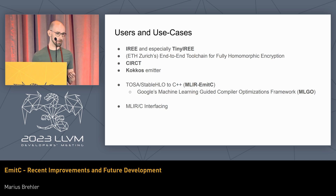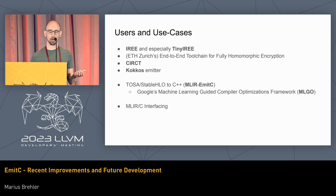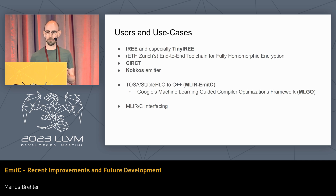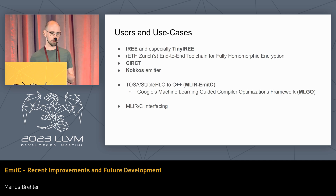What I mainly want to present is use cases we've found out in the wild that we weren't aware of. One of those is Erie and especially Tiny Erie, which we worked on, but EmitC is also used in toolchains for homomorphic encryption — a talk was given yesterday evening, and other frameworks use it as part of their fully homomorphic encryption toolchain. It's used in SERC, there is also a Cocos emitter, and another use case taken up by Google: the Machine Learning Guided Optimization Framework uses it, as well as MLIR-C interfacing, which I'll talk about later.